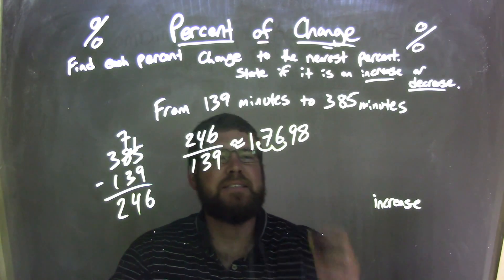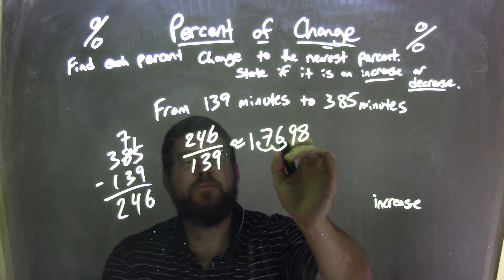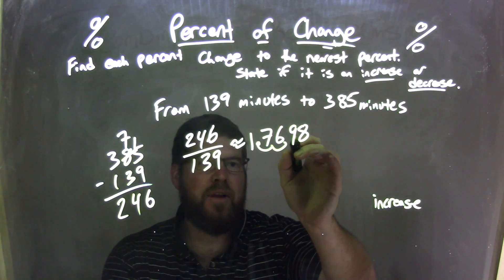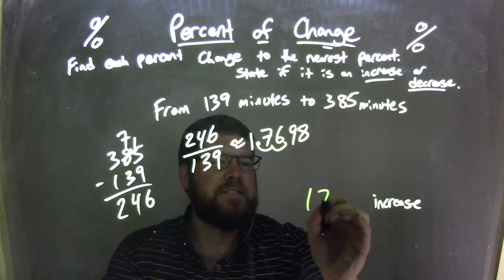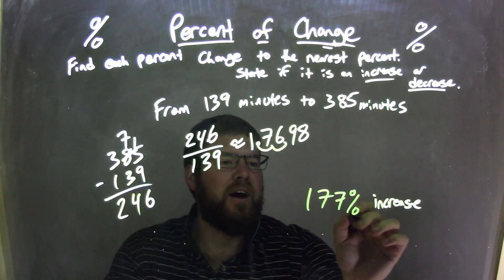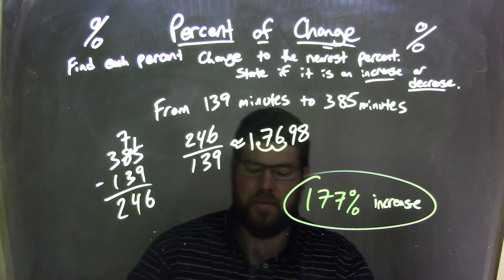That 6 and the 9, the 9 causes that 6 to round up because it's greater than 4. It's 5 and up. So we actually have a 177%, 177% increase here.